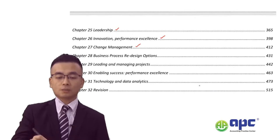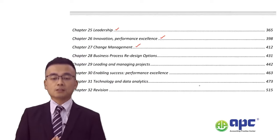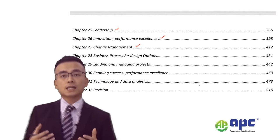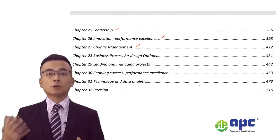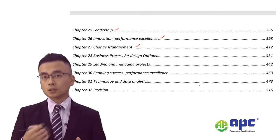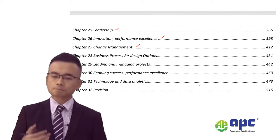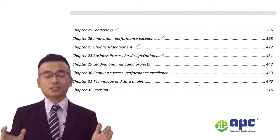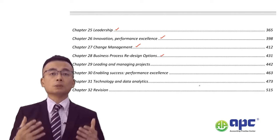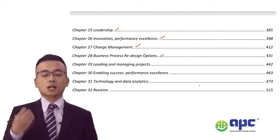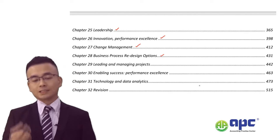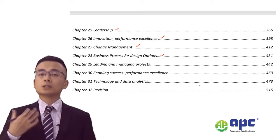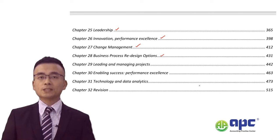Chapter 27 is quite important, covering models and theories of change management — especially if a company is undergoing financial difficulties and how to change it. First, we need a very good plan and a defined change agent. Chapter 28 looks at business process design options — each activity in the business, such as procurement, has steps called business processes. We'll look at ways to redesign those processes and evaluate different options. Chapter 29 is all about project management, one of the most important chapters in the SBL exam.